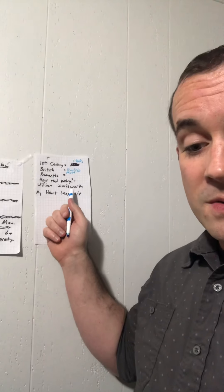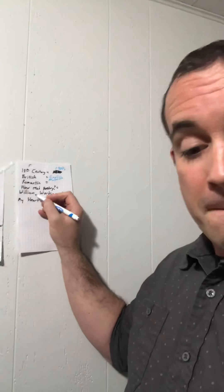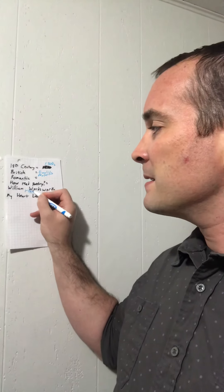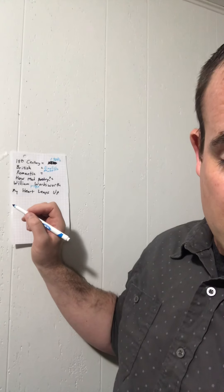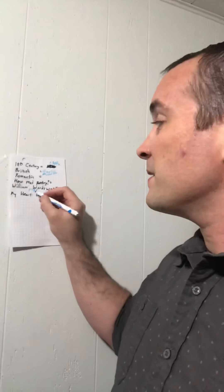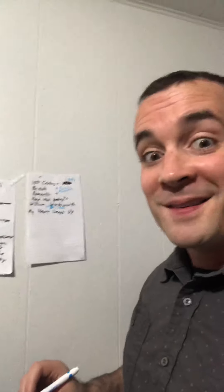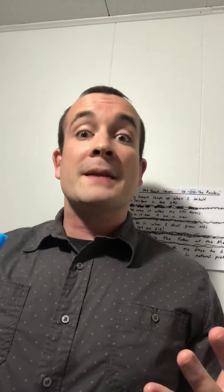William Wordsworth was a British poet who lived from 1770 to 1850, so he was a pretty old guy when he finished up. He liked to write about art, nature, and things that made him happy — and that's where the 'romantic' part comes in.